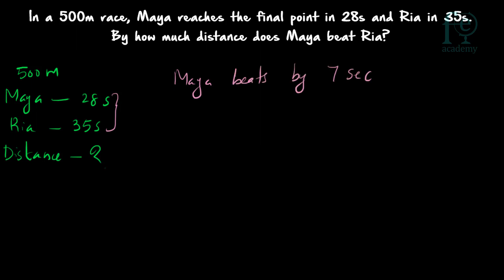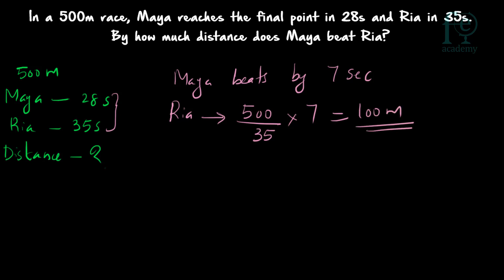So in these 7 seconds, how much distance will be travelled by Priya? That will give our answer. Priya's speed will be 500 divided by 35, since she completes 500 meters in 35 seconds. So 500 divided by 35, multiplied by 7, will give our answer — which gives us 100 meters. So Maya will be beating Priya by 100 meters or 7 seconds.